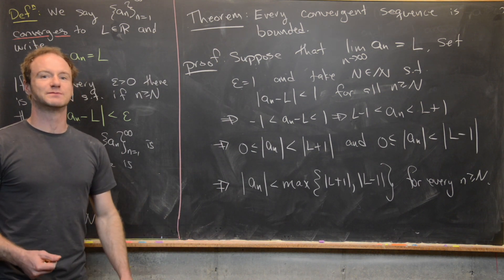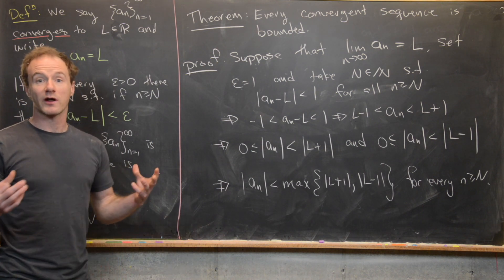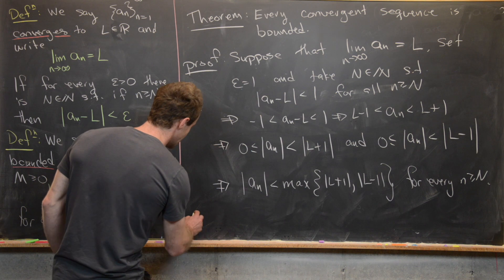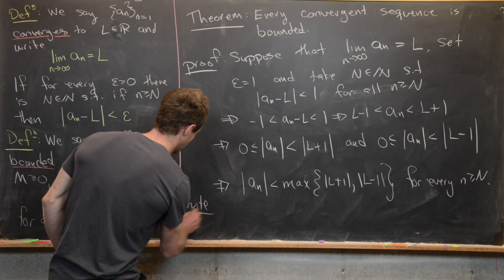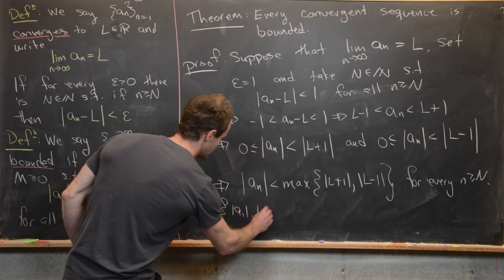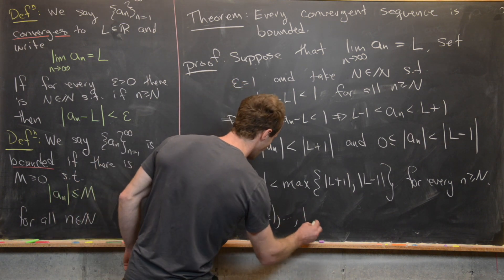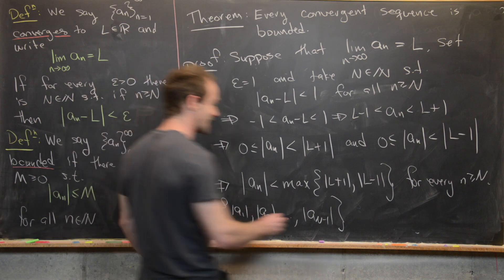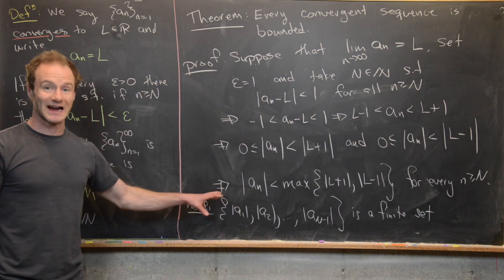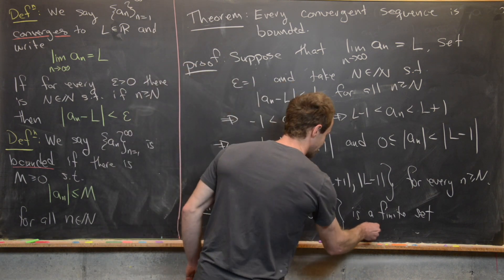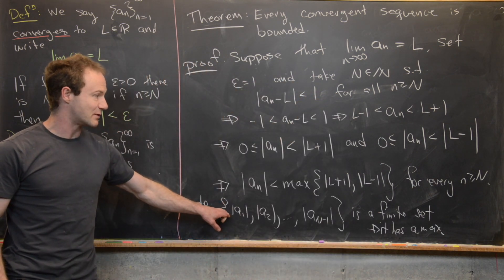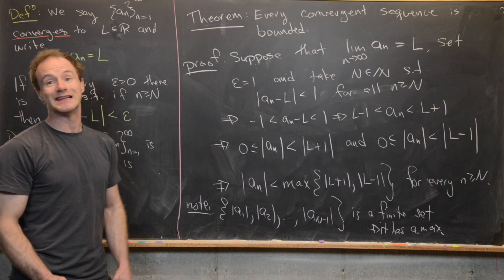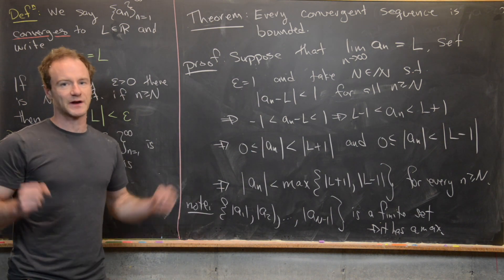What about what happens before capital N? We're in luck because in that case we only have a finite number of terms. The absolute values |a_1|, |a_2|, all the way up to |a_{N-1}| form a finite set. Since that's a finite set of real numbers, it has a maximum. We can take the maximum of this set together with the maximum of those two numbers.